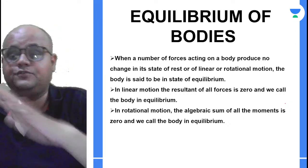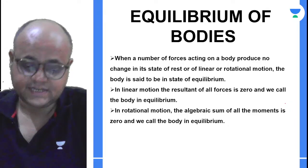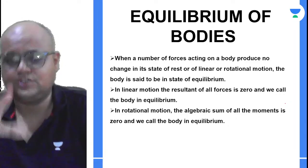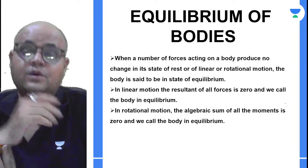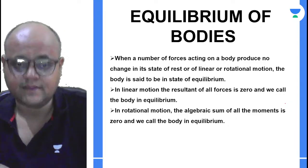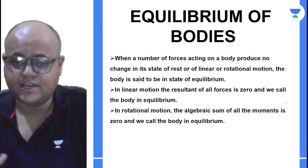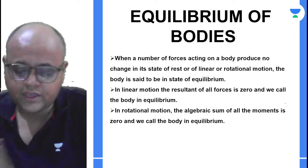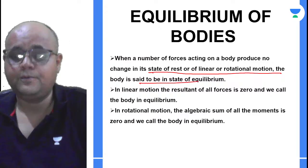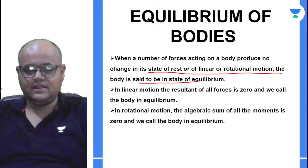When we talk about equilibrium of a body, the first thing that comes to mind is that the body is not moving — that is correct but only partially correct. Equilibrium can be of two types: static equilibrium and dynamic equilibrium. Technically, if a number of forces are acting on the body and these forces are producing no effect — no change in state of rest or motion, no change in shape or size — then we say the body is in equilibrium.